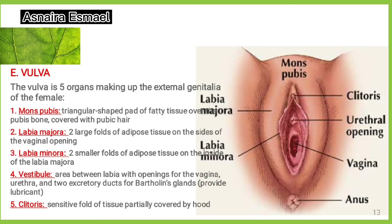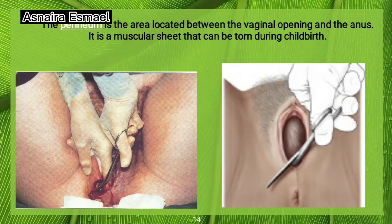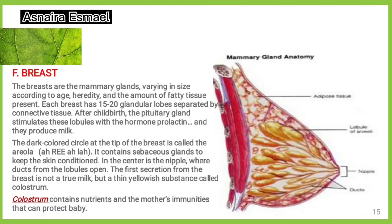Clitoris. The clitoris is a sensitive fold of tissue partially covered by a hood. The perineum is the area located between the vaginal opening and the anus. It is a muscular sheet that can be torn during childbirth. Breast. The breast is the tissue overlying the chest muscles. Women's breasts are made of specialized tissue that produces milk, glandular tissue, as well as fatty tissue. The amount of fat determines the size of the breast. The milk-producing part of the breast is organized into 15 to 20 sections called lobes.